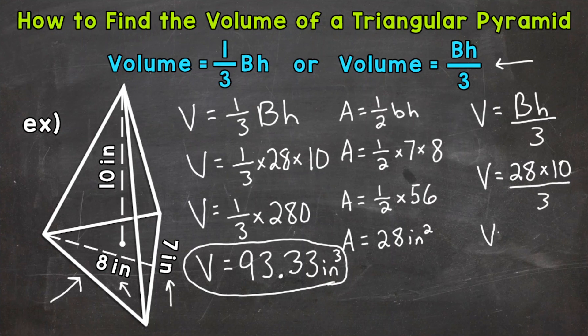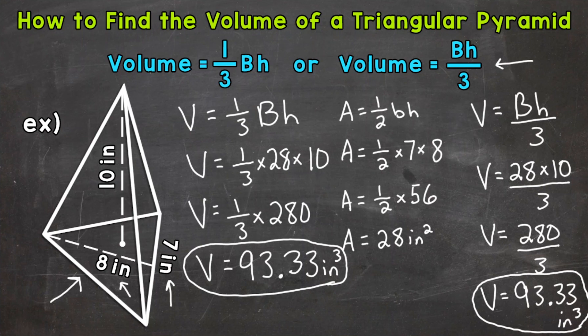So we end up with 28 times 10 is 280. Divide that by 3 to get our final answer of the same thing. 93. And again, I'm rounding to the hundredths place. 33. And I'll put my unit of measure underneath because I'm running out of room here. So 93 and 33 hundredths cubic inches.